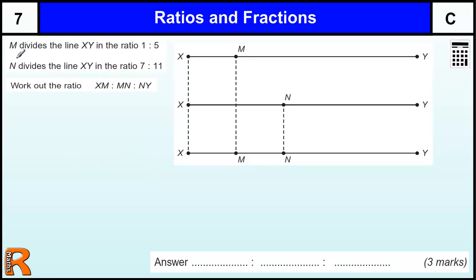Let's just work it through. M divides the line XY in the ratio 1 to 5, so this line here is five times what this line is here. N divides XY in the ratio 7 to 11, so this is 11 times. It's a ratio of 7 to 11.